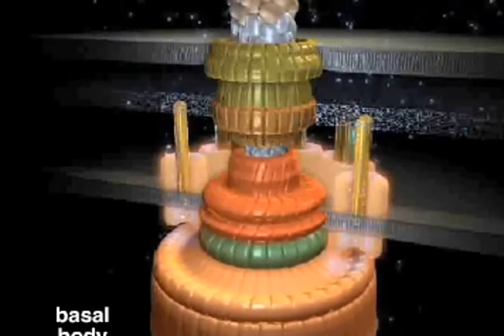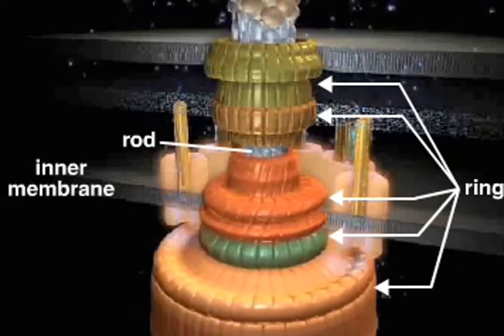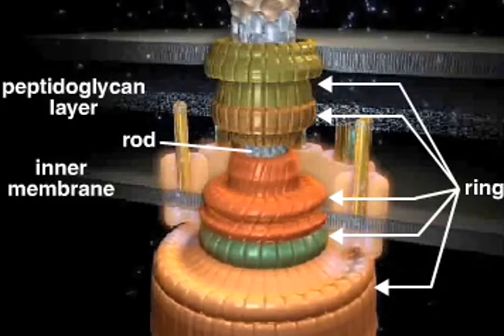The basal body consists of a rod and a series of rings embedded in the inner membrane, the peptidoglycan layer, and the outer membrane.